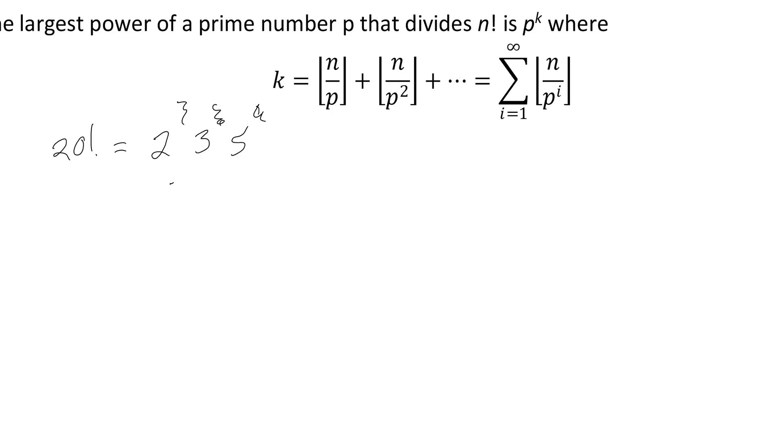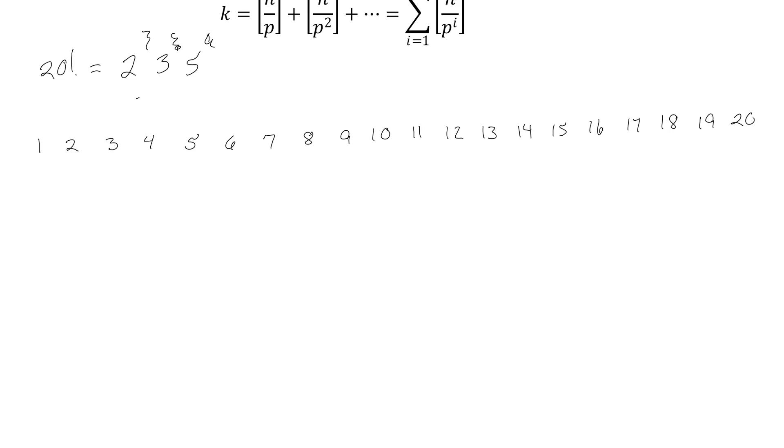The question is then how many twos? If I list the numbers 1 through 20, all these numbers are getting multiplied together. So how many twos are there? There's a two here, there's two of them here, there's one here, there's three of them here, there's one here, there's two of them here, there's four of them. There's two of them here, there's four of them here, there's one of them here and there's two of them here.